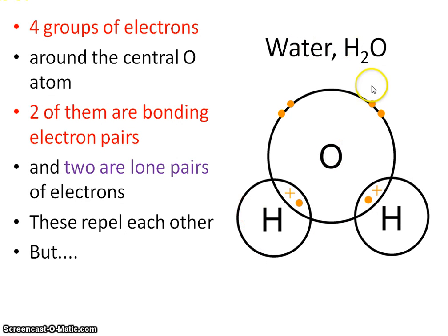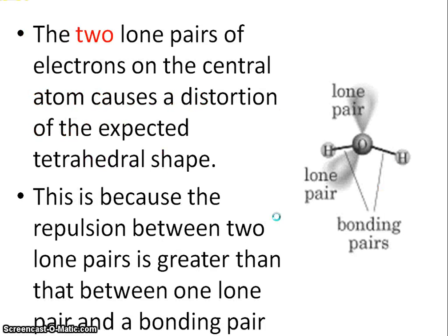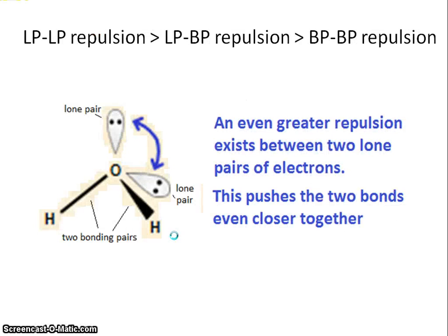Let's take a look at the water molecule. From the dot-cross diagram, we again have 4 groups of electrons, but this time 2 of them are lone pairs and 2 are ordinary bonding pairs. Repulsion occurs between those groups of electrons, and because we've got 2 lone pairs, that brings about a distortion of the expected shape — because 2 lone pairs exert an even greater repulsion, far more so than the repulsion between 2 ordinary bonds or between a lone pair and a bonding pair.